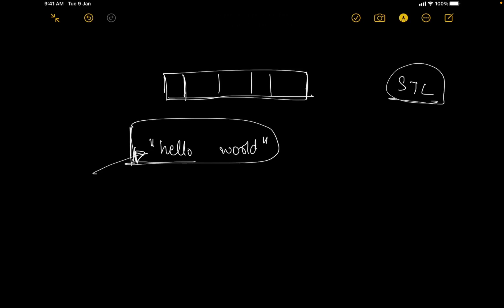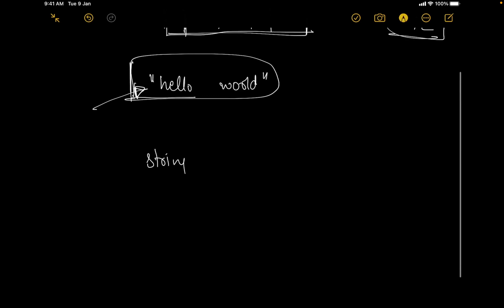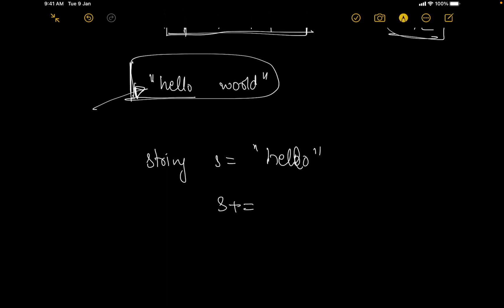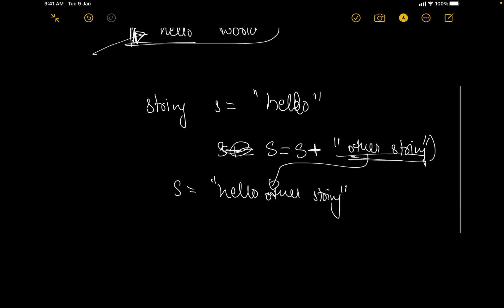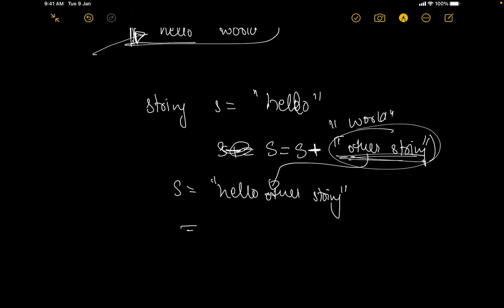So what are the various operations we can perform on a string? Let's say I have a string s that is 'hello'. I can add something at the end of the string: s = s + some other string. If the other string is 'world', it would become 'hello world'.